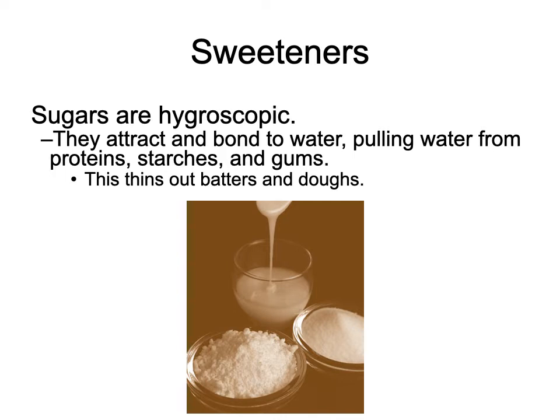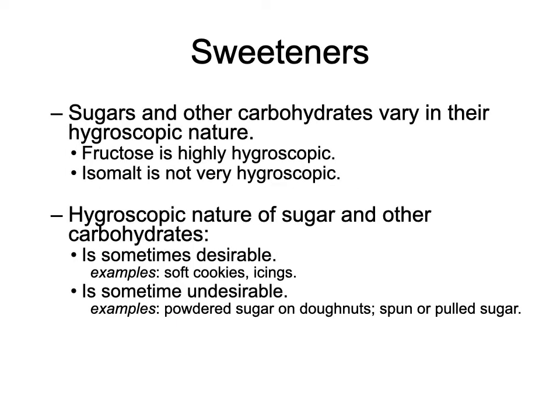Sugar's hygroscopic nature helps keep moisture in a product — keeping a muffin moist, for example. But it also means sugar left out in humidity will get sticky and clump because it grabs moisture from the air. Sugars vary in their hygroscopic nature: fructose is highly hygroscopic, while isomalt is much less so. In a humid environment like Iowa, isomalt-based decorations won't get sticky as fast, whereas table sugar decorations will become sticky very quickly.